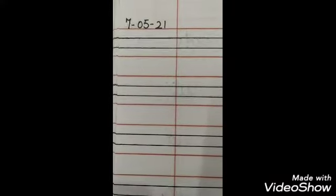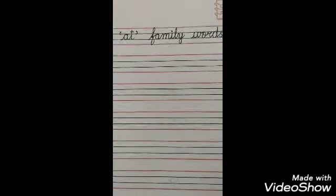Write down date on the top left corner like this inside the box. And HW homework on the top right corner like this. Give heading At Family Words.